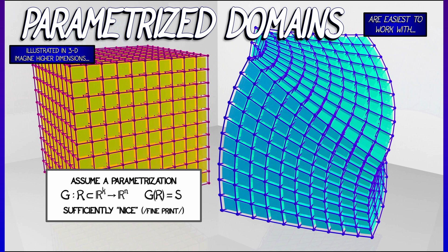Let's assume we have some region, capital R, inside of R^k, and some function that takes that region into R^n. Let's call that function G. And the image of that is some k-dimensional surface. Let's call that S. This parametrization has to be sufficiently nice.